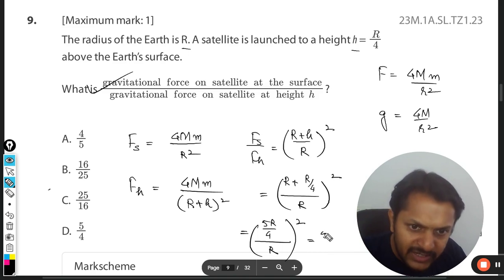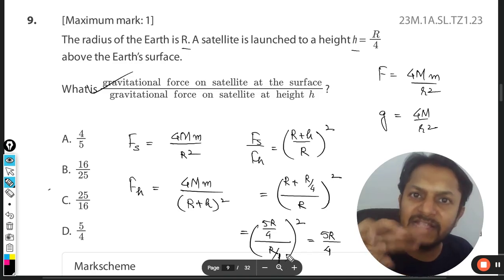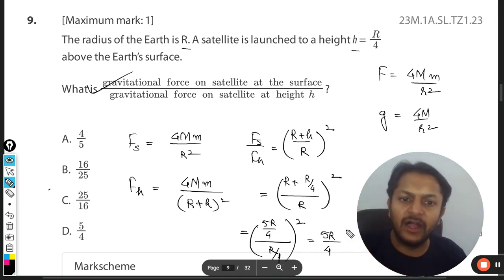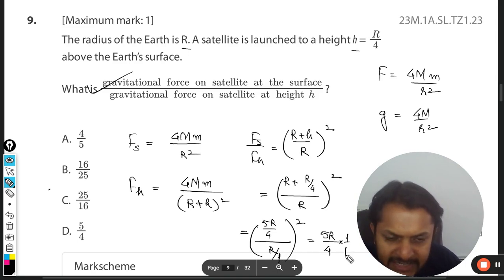The reciprocal of this will be taken. It will become 5R/4, and this R/1 becomes 1/R, multiplied here. The square will remain, so R and R cancel out.